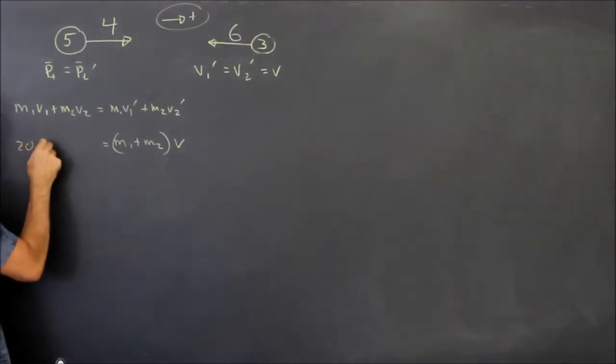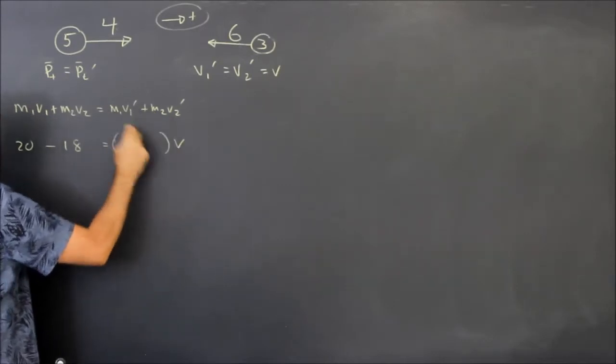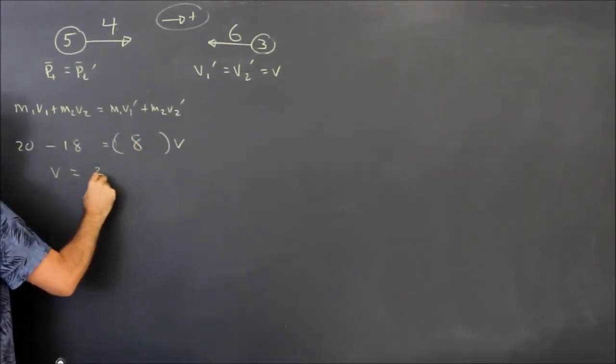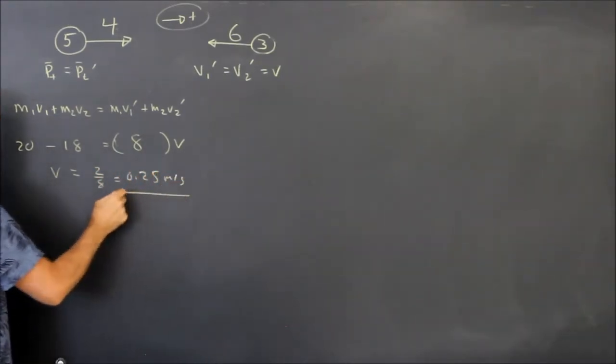This is 20 minus 18. And M1 plus M2, well that's just 8. So their V is going to be 2 over 8, which is 0.25 meters per second.